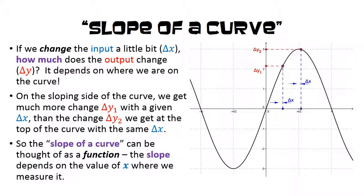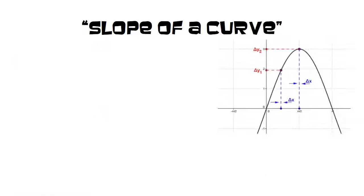So the slope of a curve can be thought of as a function. The slope depends on the value of x where we measure it. But even with a very small input delta x, the graph in that area is still a curve.